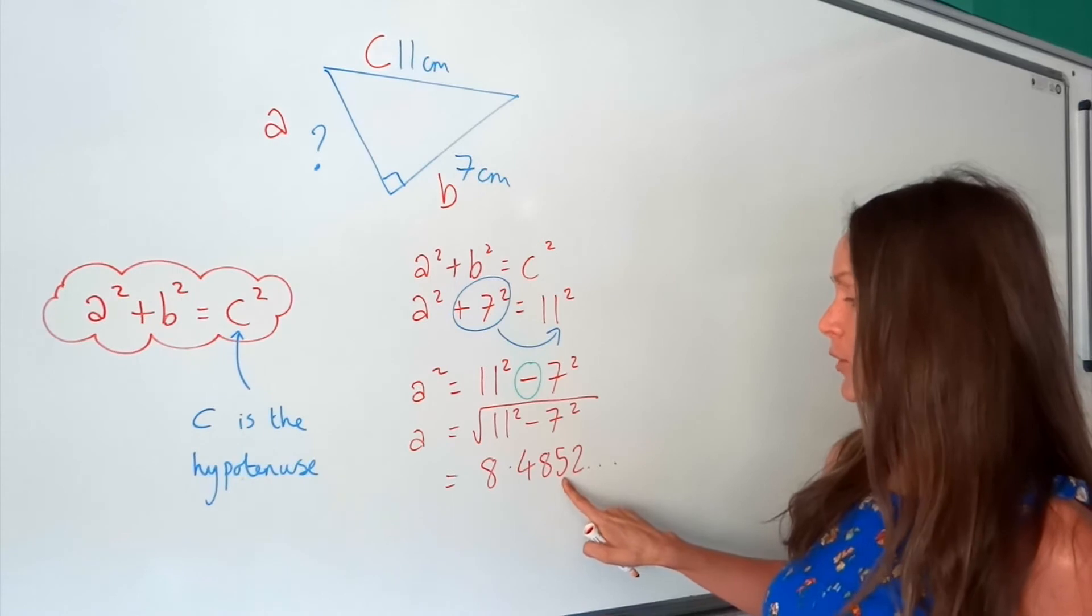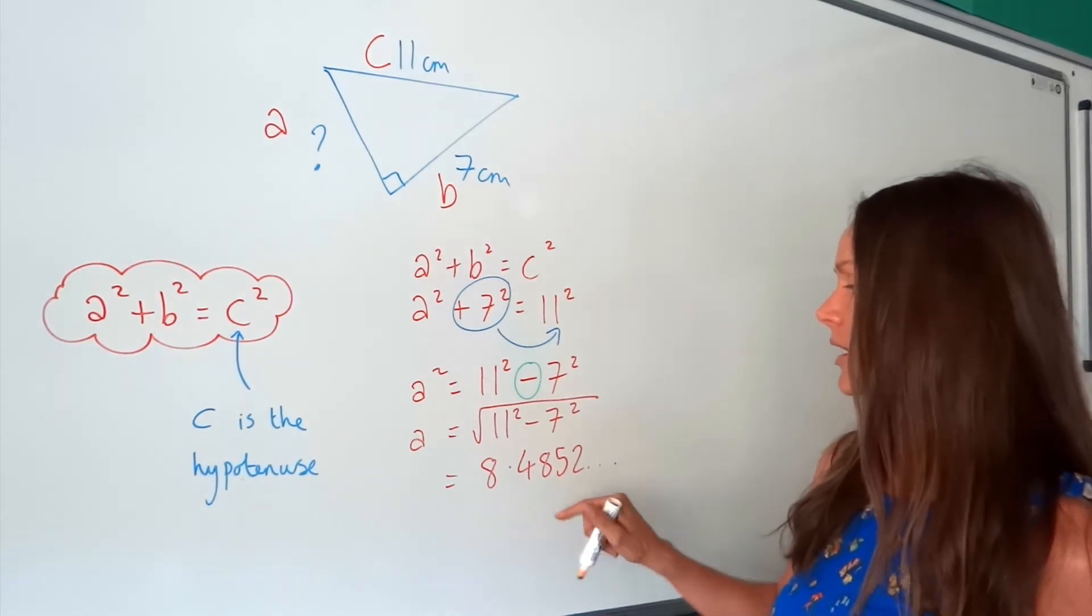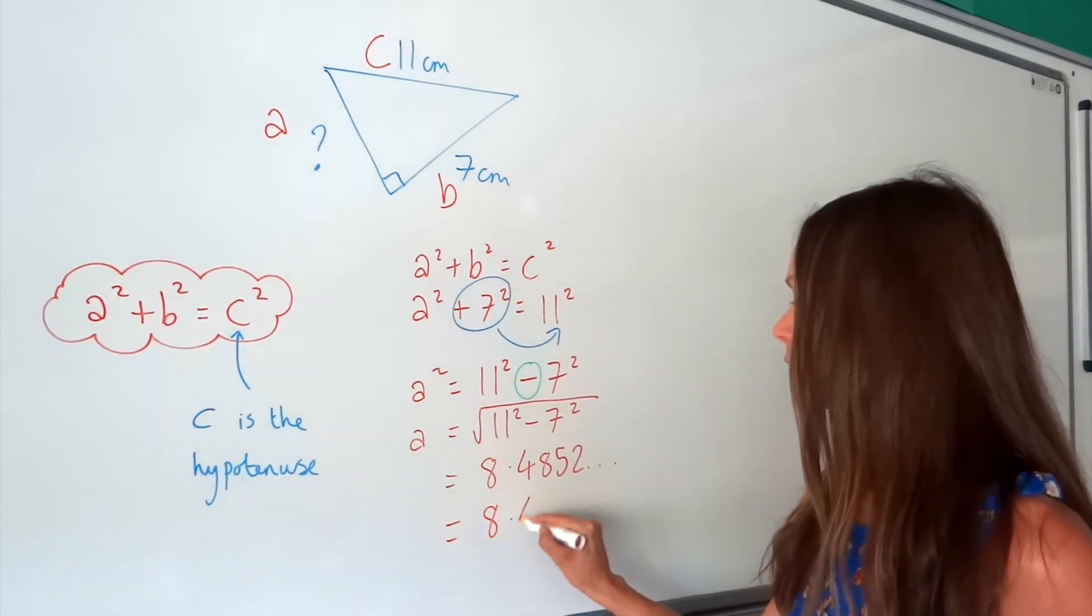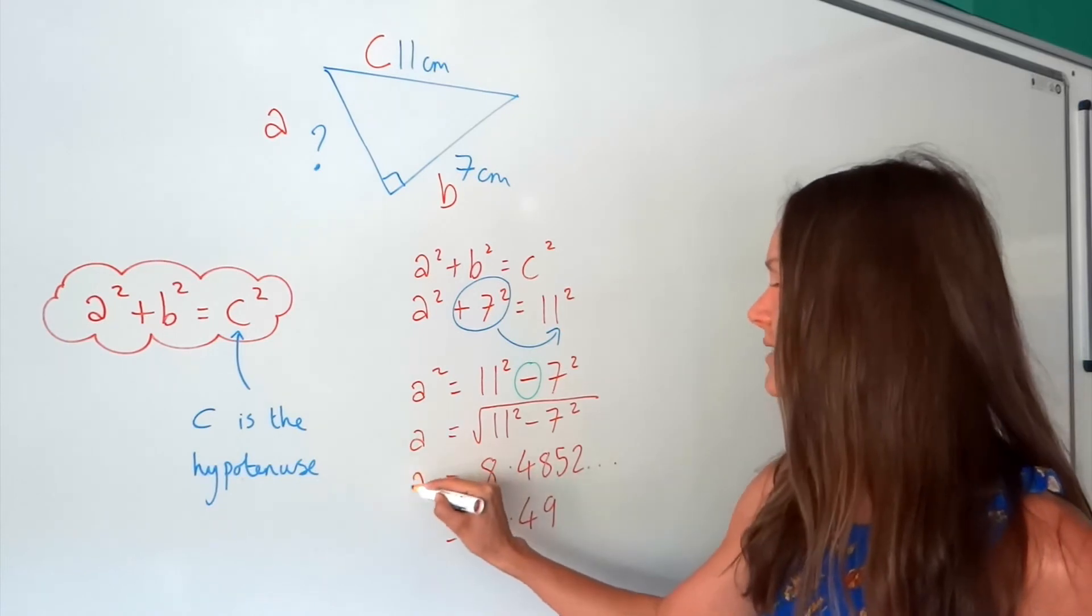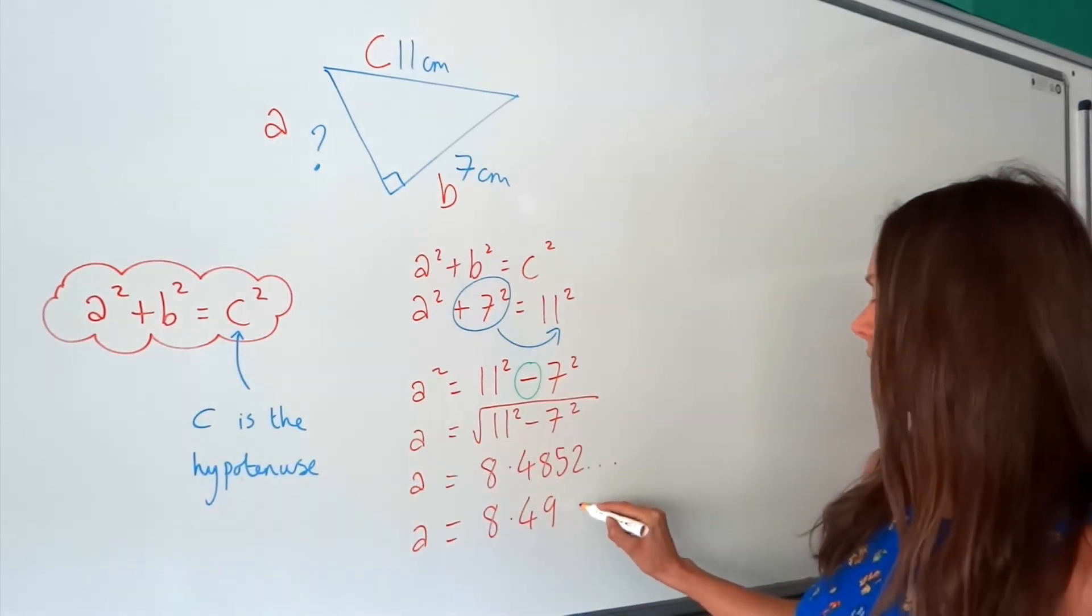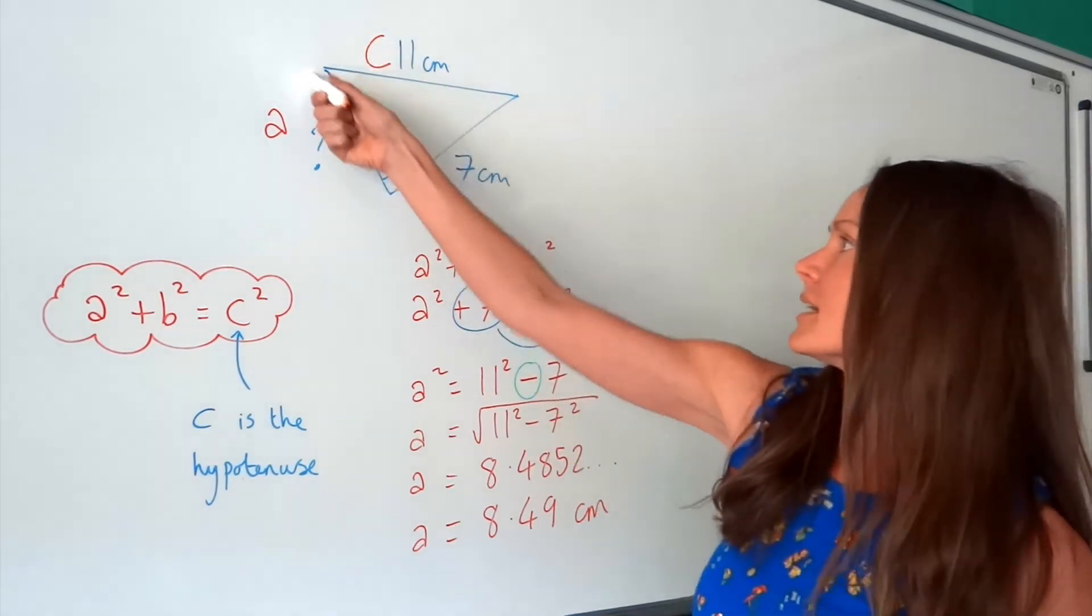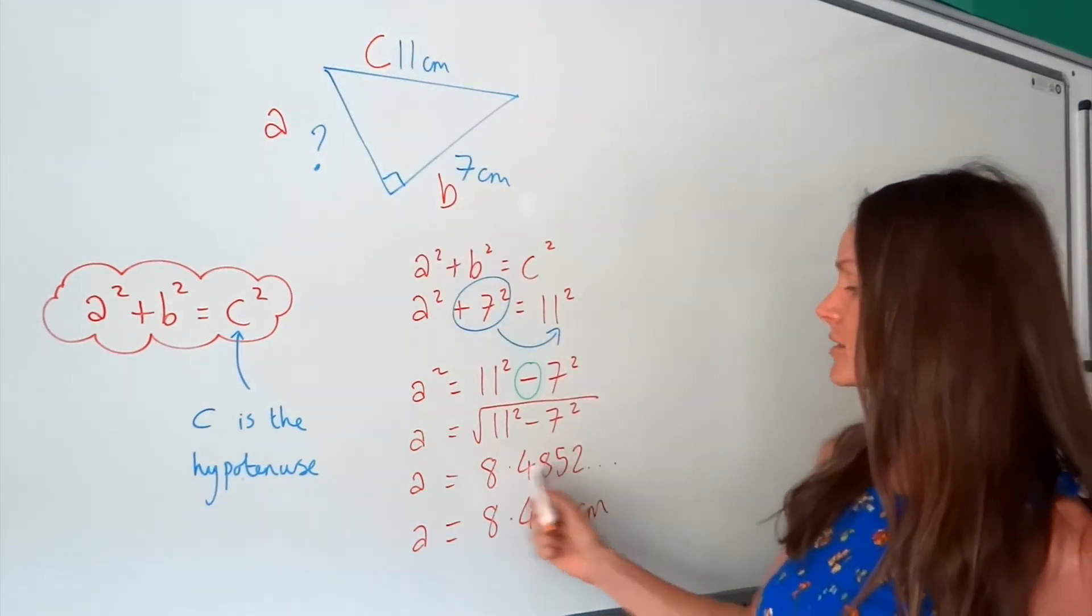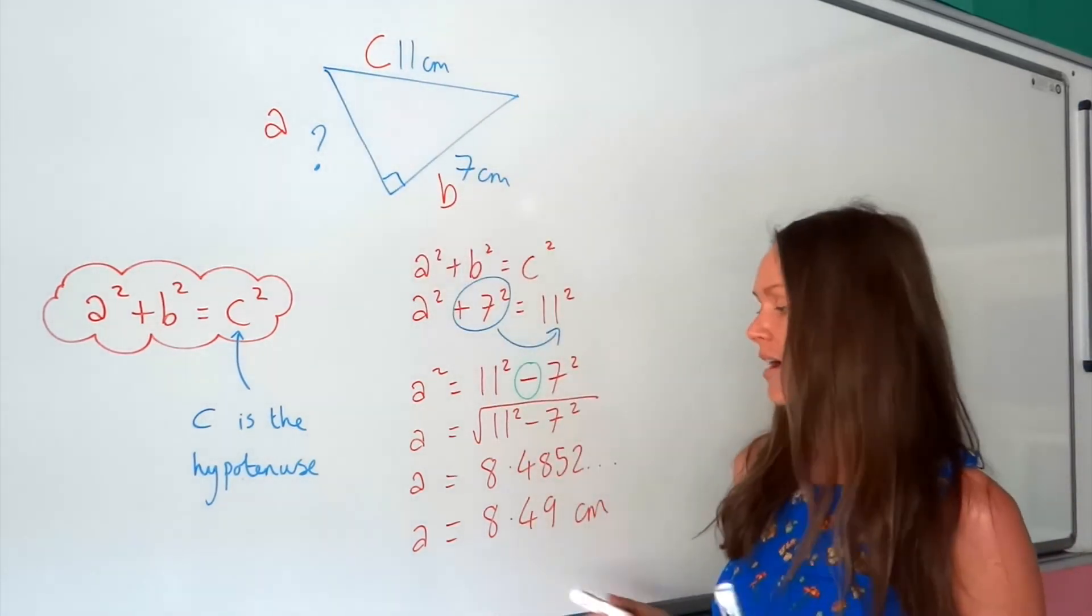And I'm going to round to three significant figures. So 1, 2, 3, but the 5 rounds that 8 up to 9. So I've got 8.49. So A's still there, over on the left. So that means A, the side here, if we round to three significant figures, is equal to 8.49 centimeters.